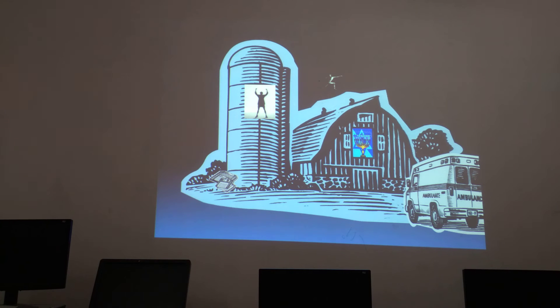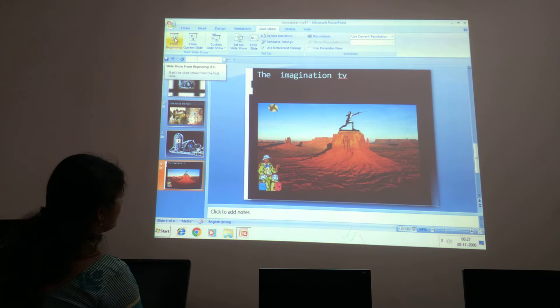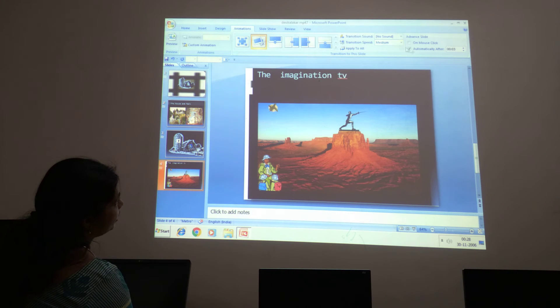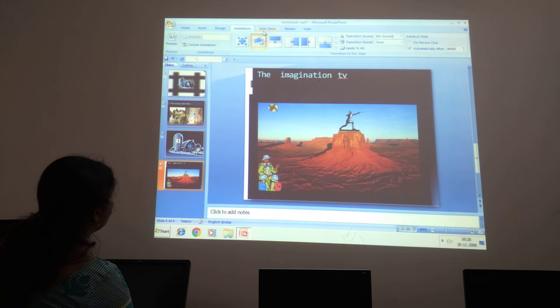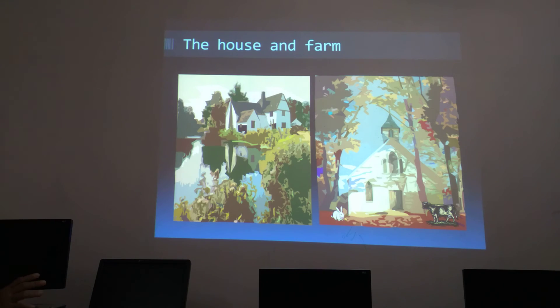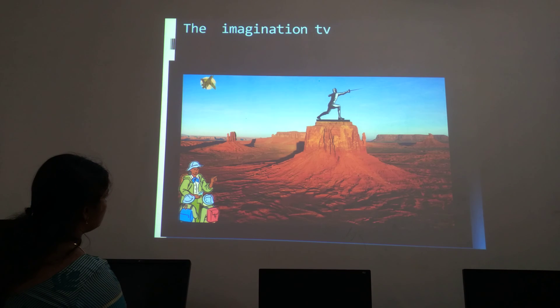Four slides were there and we have made the animation for them, playing the slide show, children. In the animation tab, check the transition speed — here I am keeping it slow, children. Now we will see the slide show from the beginning. See — the transition speed will be slow over here, children.